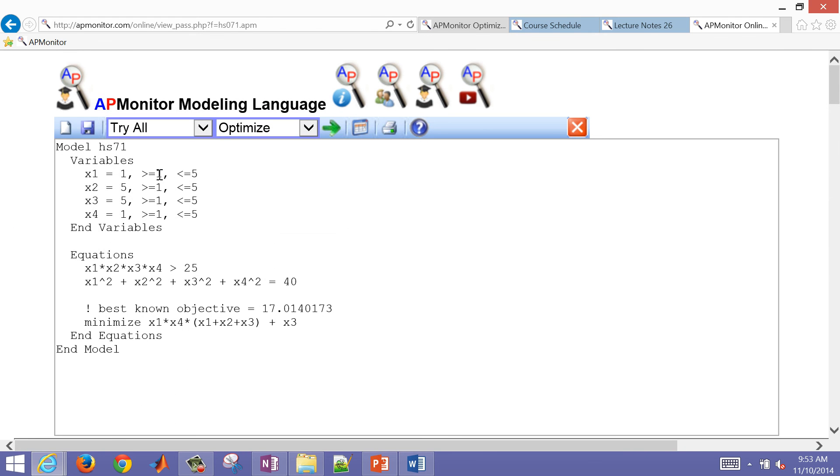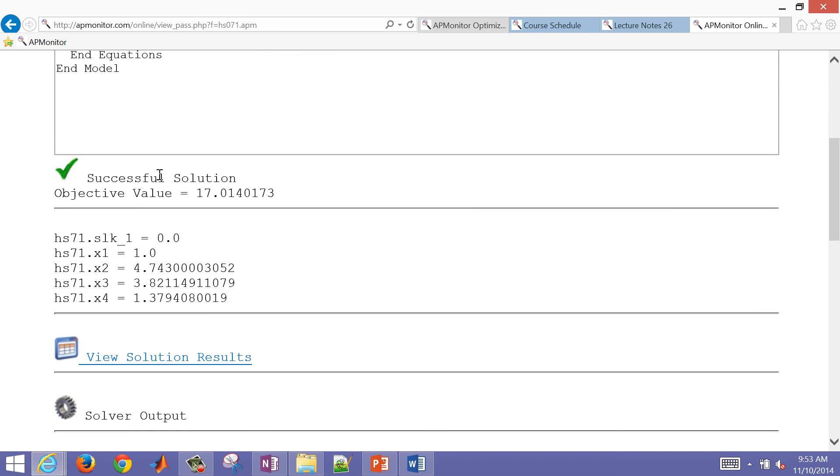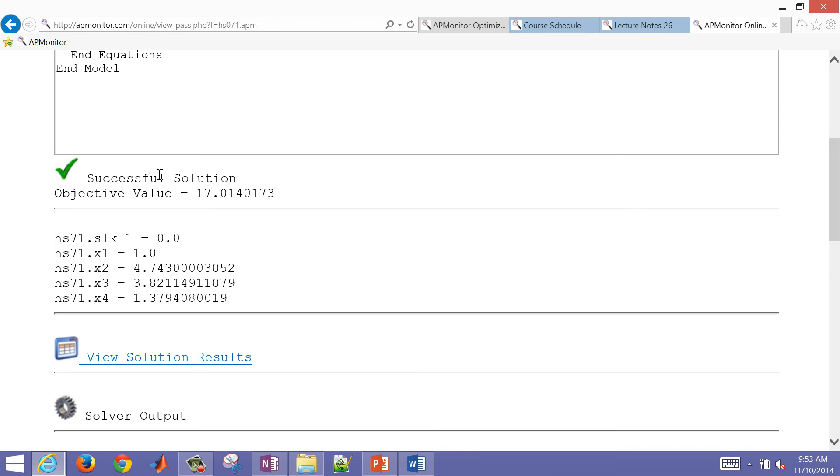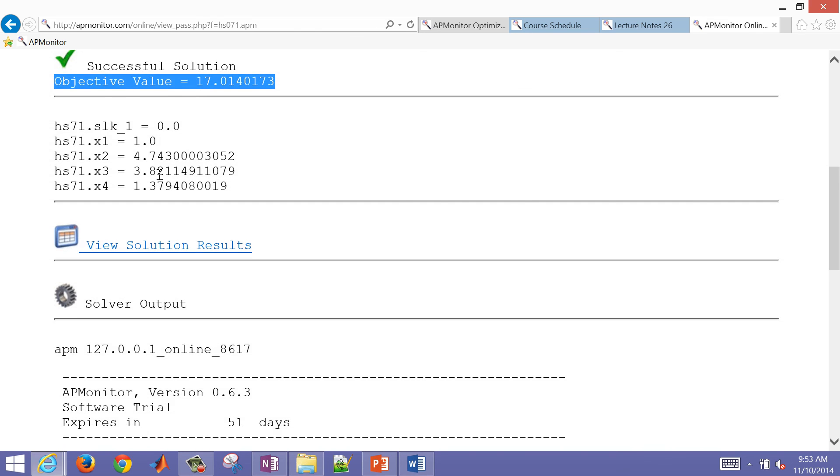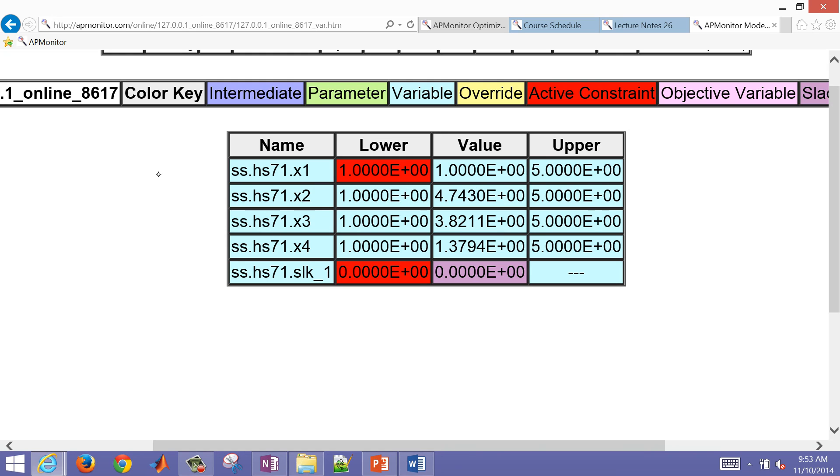Let me come back up to the top, and I'll just select the apopt solver and solve it again. And that will show me the value of my solution. So this is going to be my optimal values for x1 through x4. And then I also had an optimal objective function. If I click on view solution results, I can also see this with the constraints and the different variables for this problem.